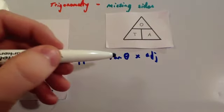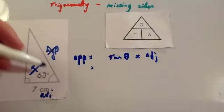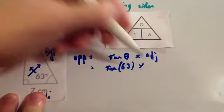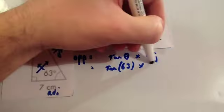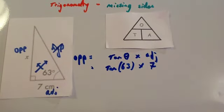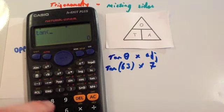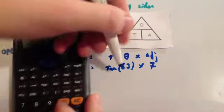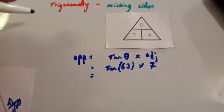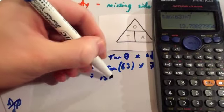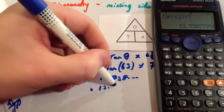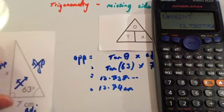The opposite is going to be tan(θ) times adjacent. θ is your angle, so we get tan(63) times the adjacent, and the adjacent was 7. So you get your scientific calculator and type that in: tan(63), close brackets, times 7. You get 13.738..., so you write down that calculator display — 13.738... — and then round it to 13.74 centimetres. So we've worked out the length for the opposite.